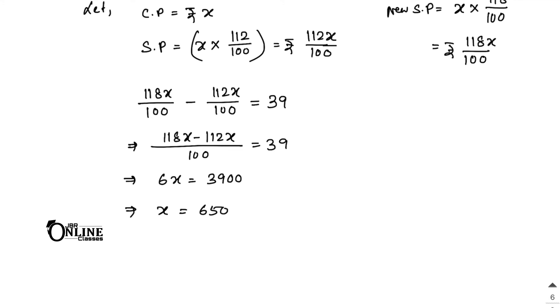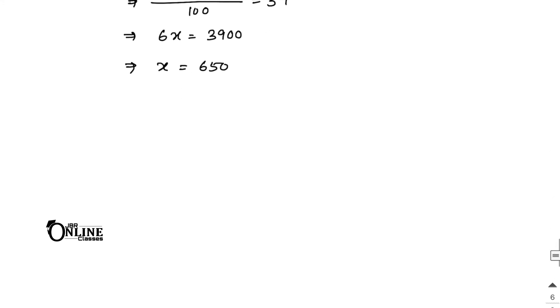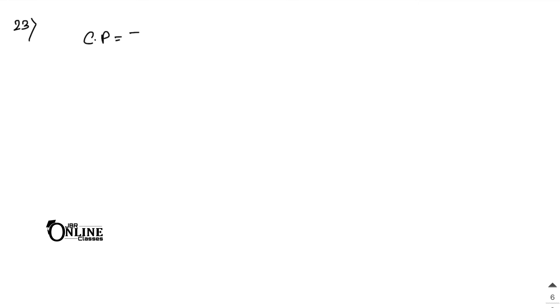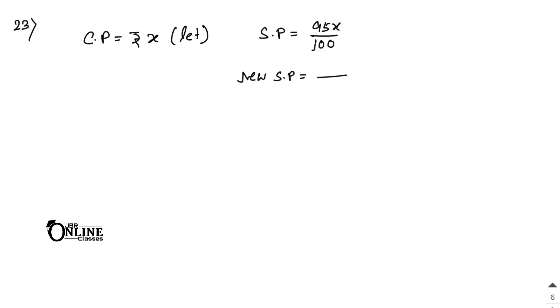So 650 is the cost price of the bag. Sum number 23: A shopkeeper sells a sweater at a loss of 5%. Let CP equal rupees x, so SP equals 95x by 100. If he had sold it for 60 more he would make 15% profit, so new SP equals 115x by 100.